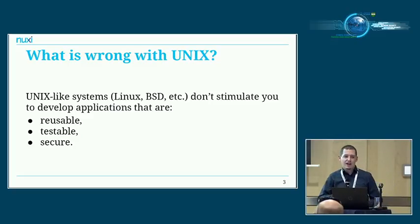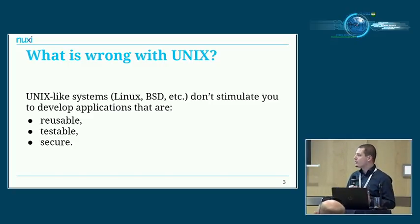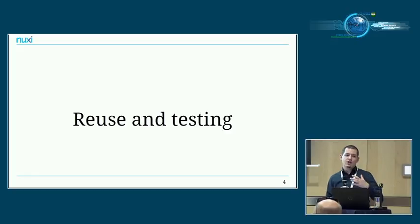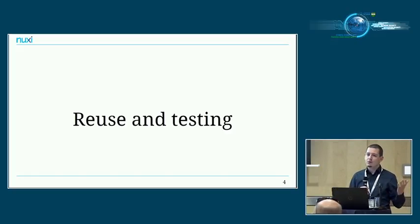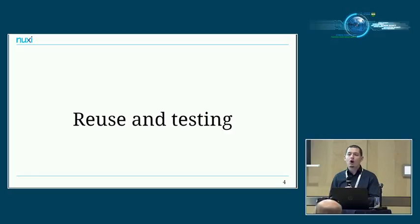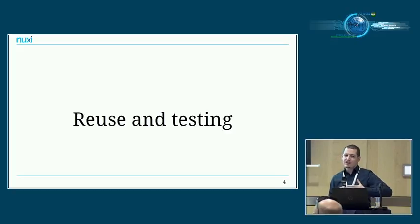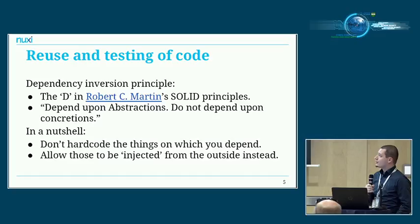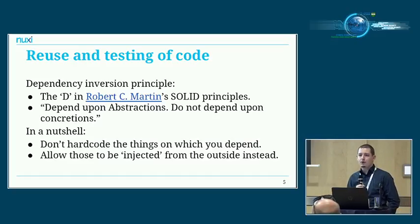That's a really bold claim, so over the next 10 to 15 minutes I want to explain this in depth. First I'm going to focus on reusability and testability of applications built on UNIX-like systems. Instead of focusing on applications, let's first take a look at how people write reusable and testable code — at the C file level, at the class level — really at a lower level than entire programs.